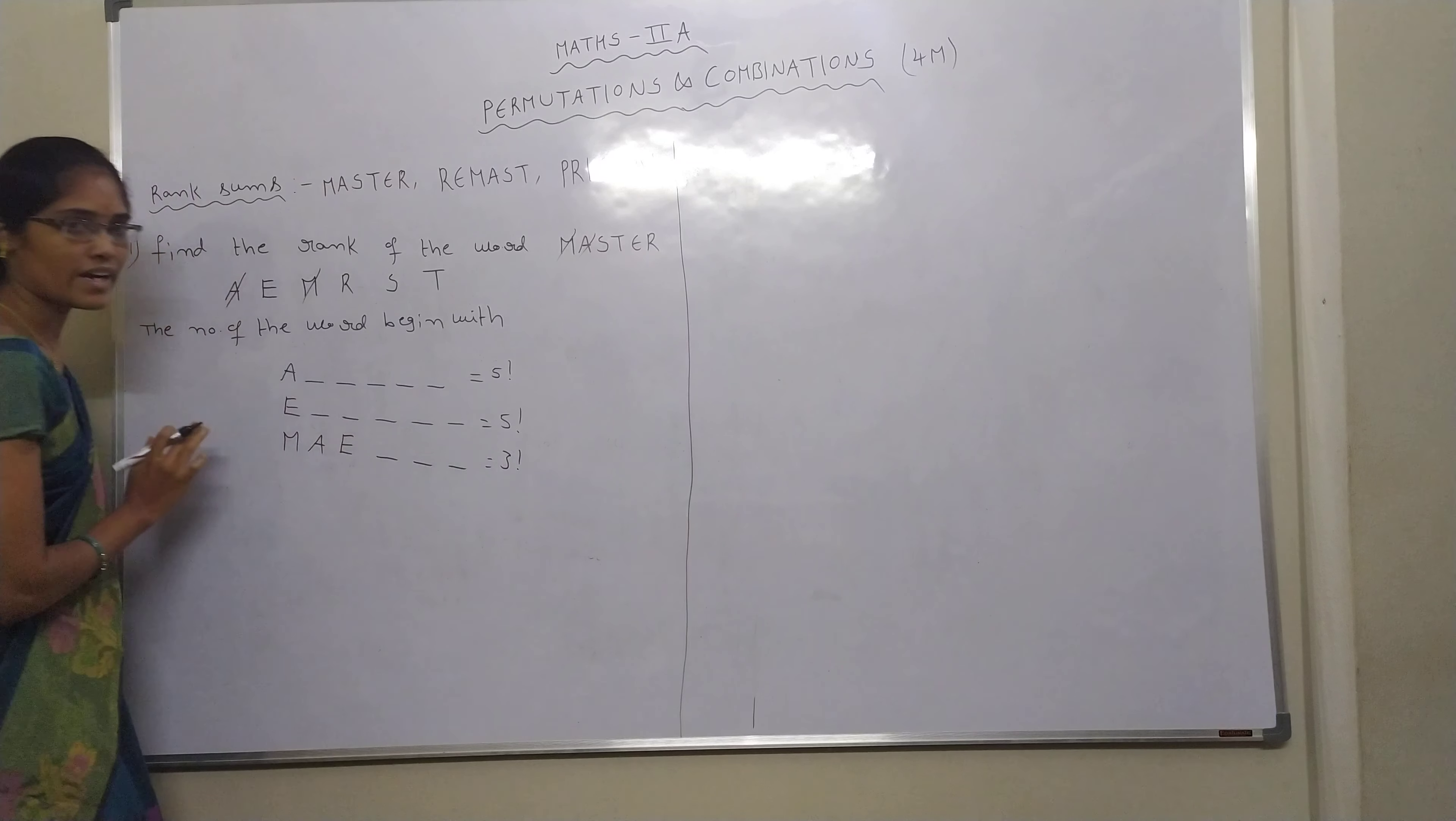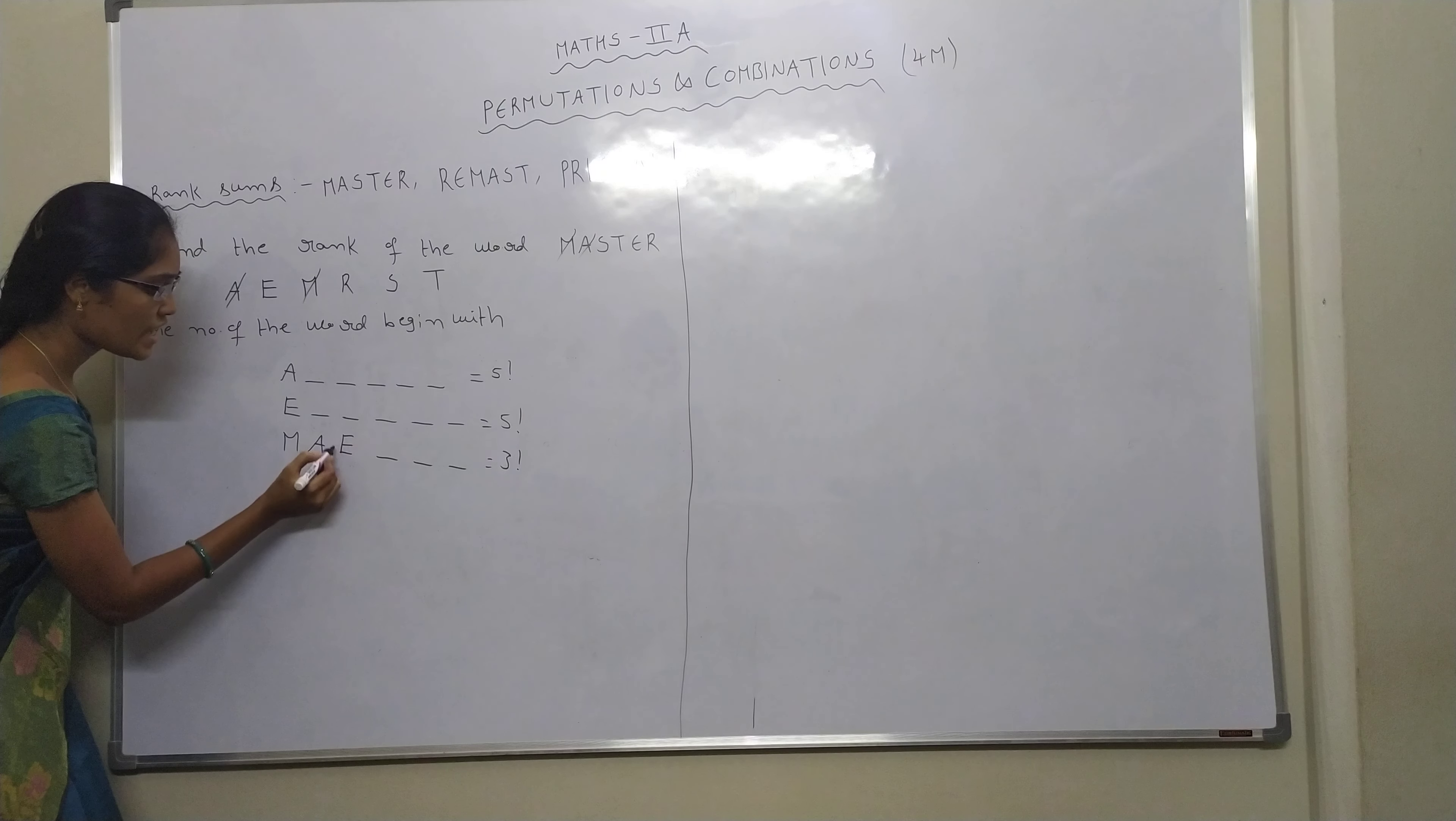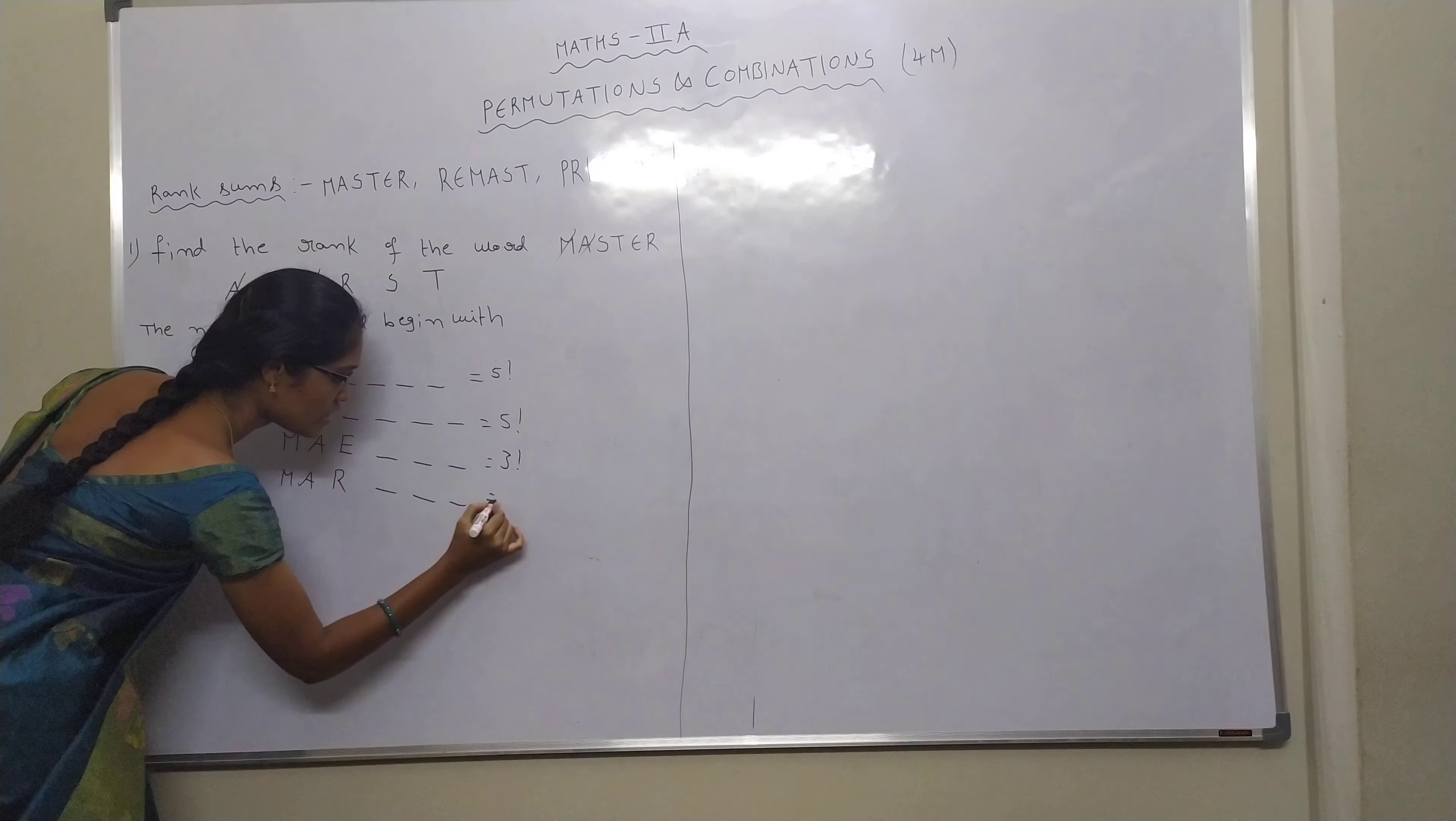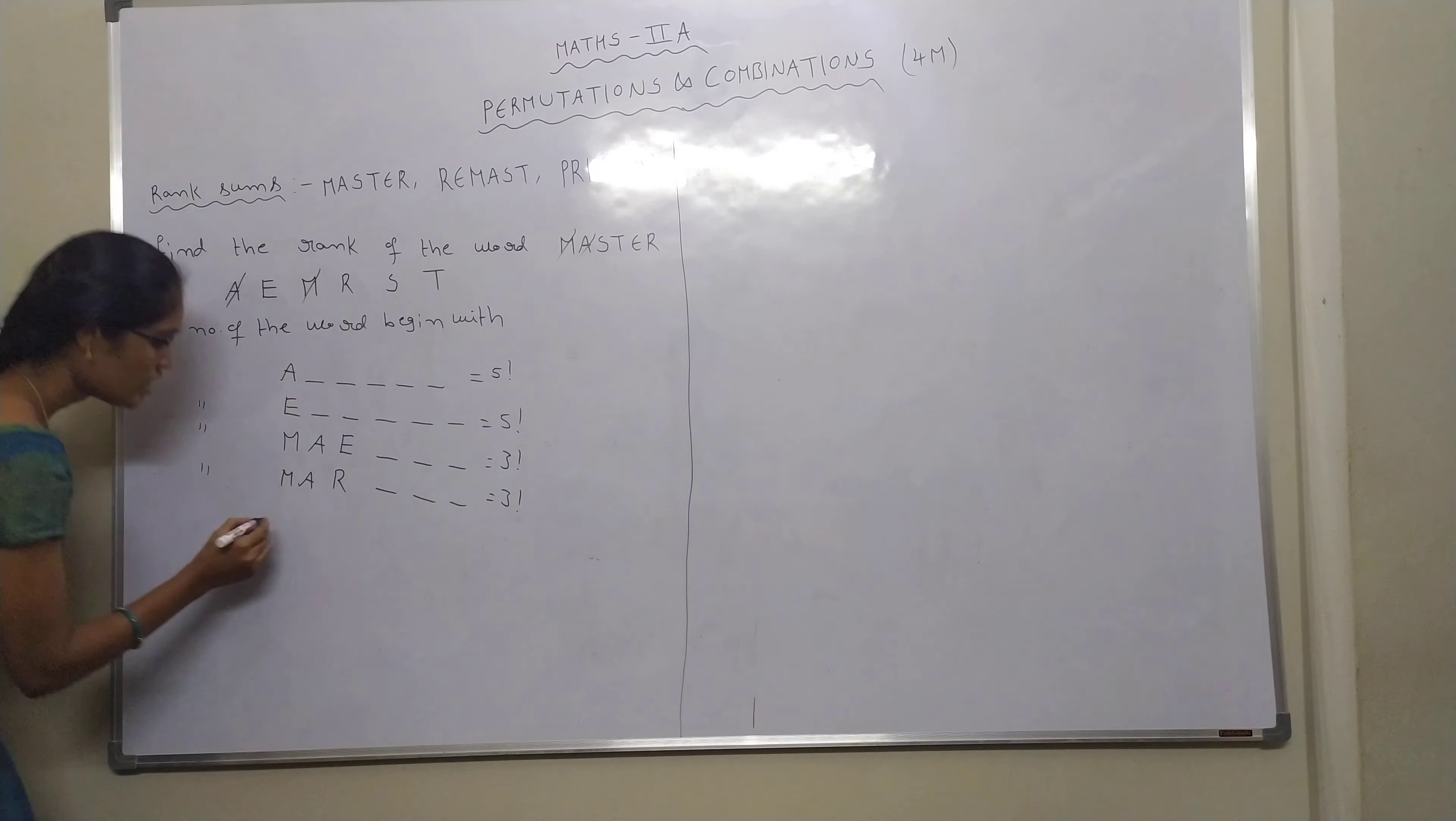Next step, A is fixed, we continue. Now change the next letter. E, instead of A, next in order R. So one, two, three, that is equal to three factorial. Continue with words beginning with M. The number of words reduced by this sum.